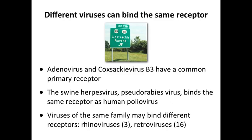Some viruses bind more than one receptor, and one receptor can bind more than one virus. For example, there is a cell receptor called CAR — Coxsackie and adenovirus receptor — which can bind either of these two very different viruses. Adenovirus is the icosahedral virus with fibers, and those fibers are what bind the receptor. Coxsackie is also icosahedral but has no fibers, yet it also binds CAR. Coxsackie virus is named after Coxsackie, New York — exit 21B on the New York State Thruway — after an outbreak in the 1940s initially thought to be polio.